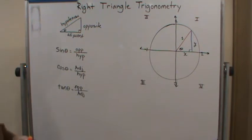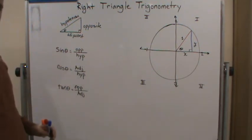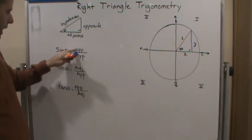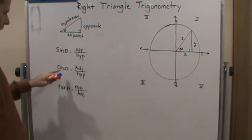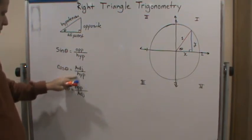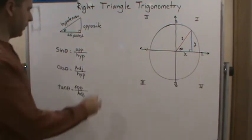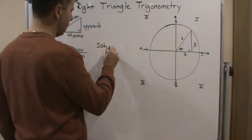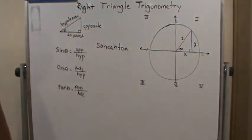So, now, a common phrase that helps us remember this is SOH-CAH-TOA. Sine opposite over hypotenuse, SOH, CAH is cosine adjacent over hypotenuse, TOA is tangent opposite over adjacent. So, if you put those together, you get SOH-CAH-TOA. And that's a common mnemonic that students will use. I've never used it, I just memorized it.